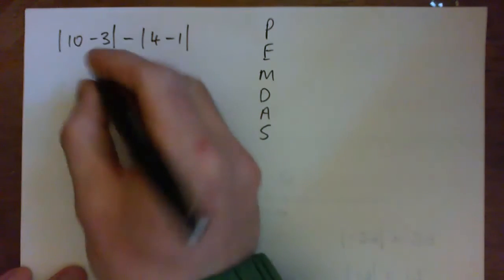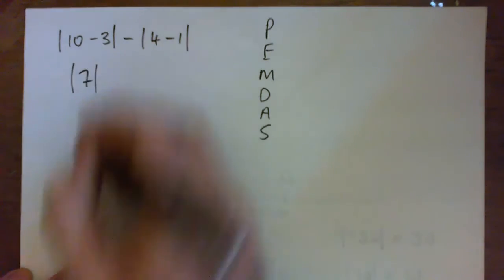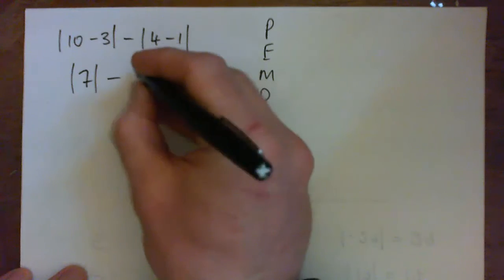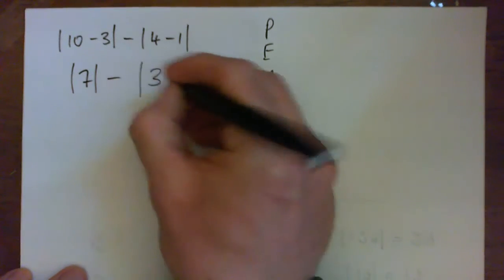So we go 10 minus 3 is 7. So we've got to get the absolute value of that on the next step. Then 4 minus 1 is 3. So we've got to get the absolute value of that.